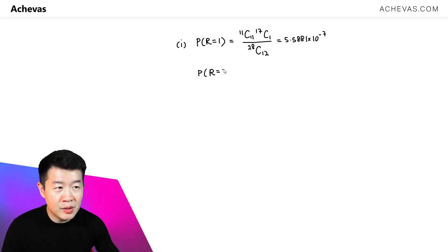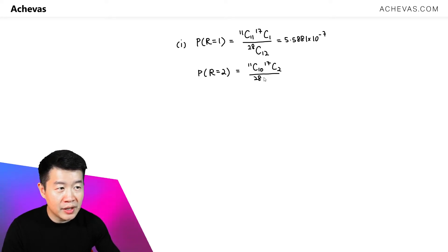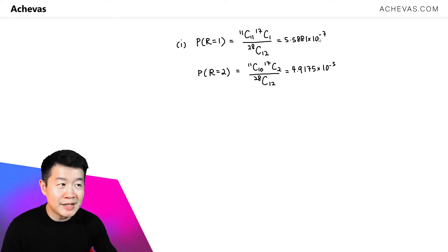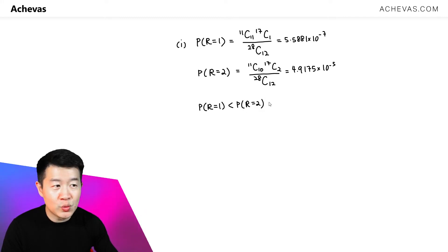Next, let's calculate the probability when we are getting 2 rectangles. Out of 11, we are going to choose 10 circles, and out of 17 rectangles we are going to choose 2, so that we have a total of 12 shapes again — divided by 28 choose 12. This is equal to 4.9175 × 10⁻⁵, which is obviously bigger. So the probability of getting 1 rectangle is less than the probability of getting 2 rectangles.